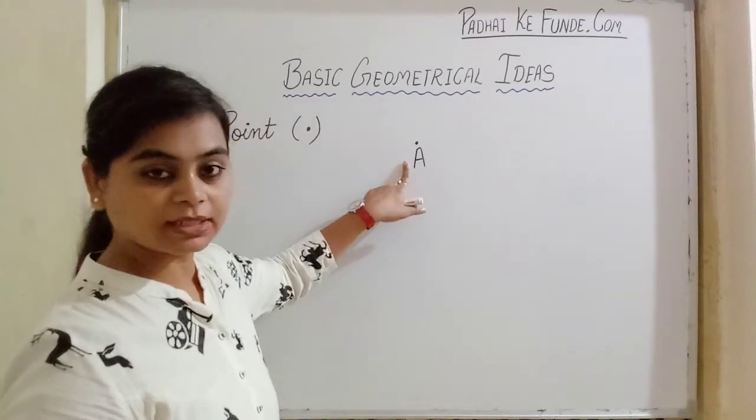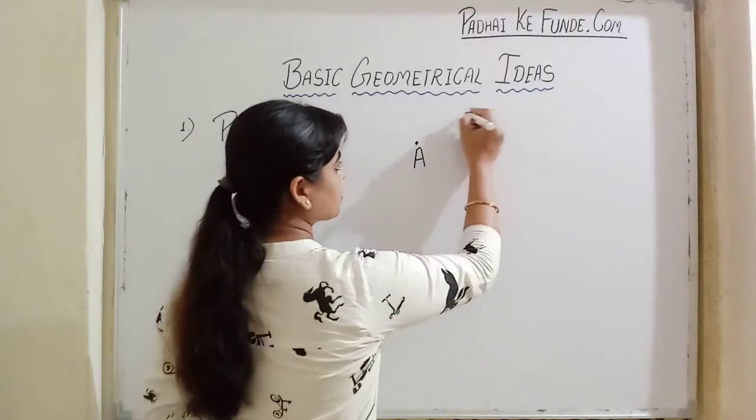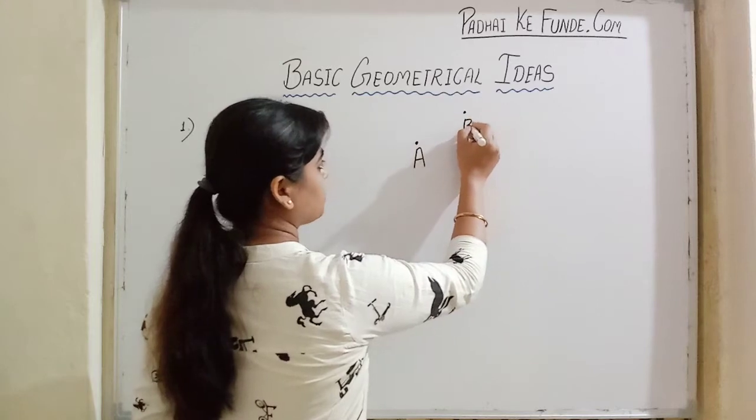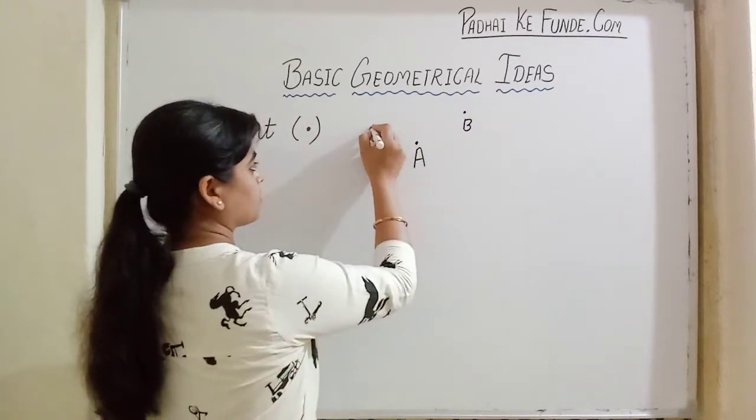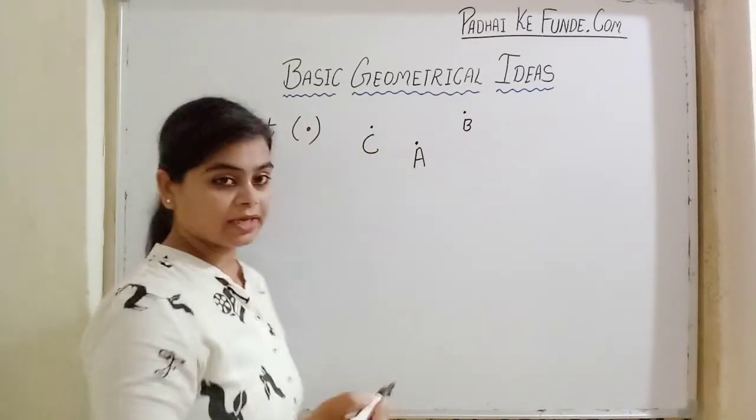And it is shown or represented by a single capital letter of English alphabet. As it exists, we call it point A, point B, point C and so on.